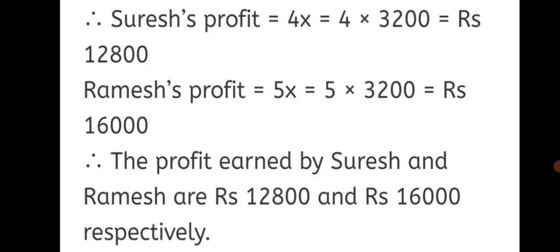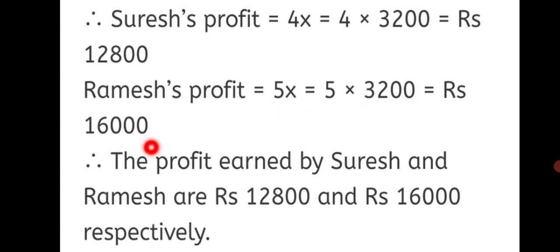Suresh's profit = 4x = 4 × 3,200 = Rs. 12,800. Ramesh's profit = 5x = 5 × 3,200 = Rs. 16,000. Therefore, the profit earned by Suresh and Ramesh are Rs. 12,800 and Rs. 16,000 respectively. First we found the profit in rupees, then we formed the equation 4x + 5x = 28,800 and found the value of x. Then we substituted the value of x for each person's profit.